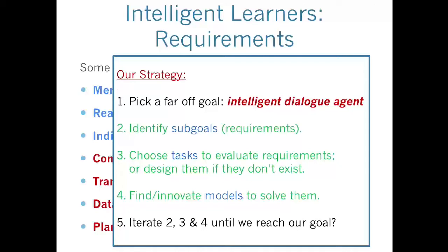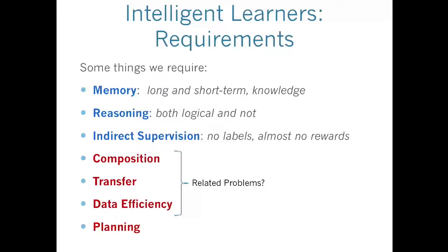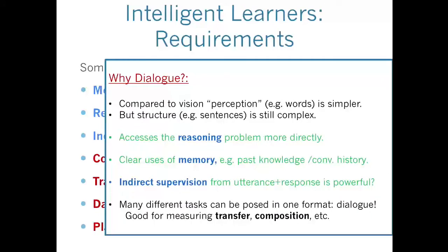This is just a very simple pseudocode of what we're doing in the research field. For the people I'm working with, we picked this far-off goal of an intelligent dialogue agent — how do we solve that? Well, we're still a long way, but we can identify requirements like the ones I've listed, then choose tasks like datasets to evaluate these requirements. If those tasks don't exist, we have to go and build them. Then we can find and innovate models to solve those tasks — those are the things we actually want as machine learning researchers — and iterate around these steps hoping we achieve our goals. I'm going to focus on those three things using the intelligent dialogue agent long-term goal.